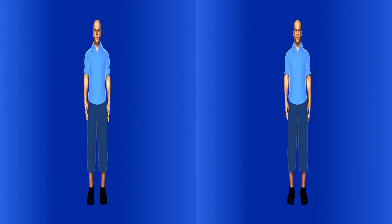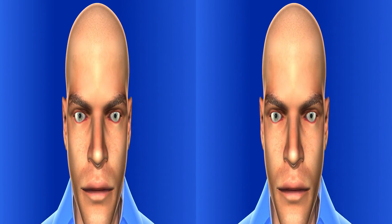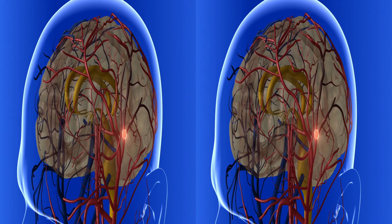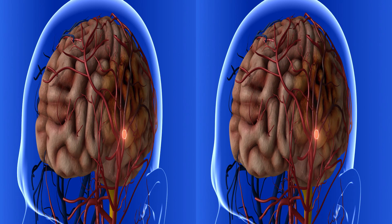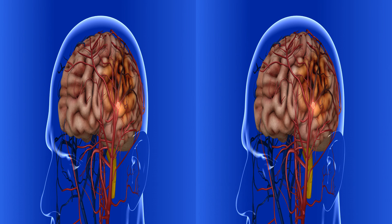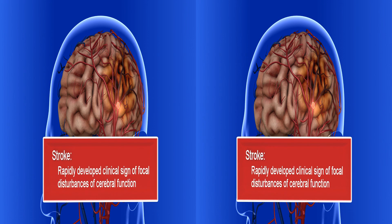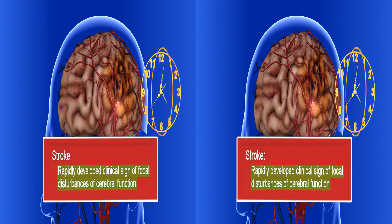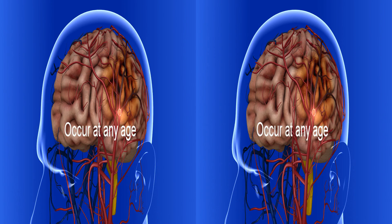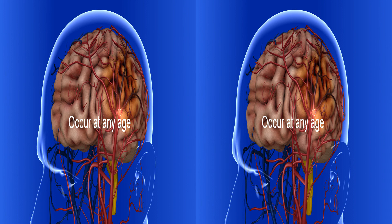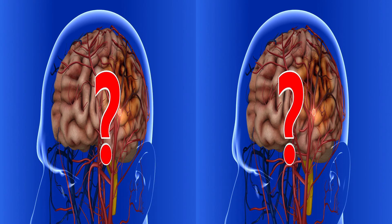A stroke is a condition in which brain cells suddenly die because of lack of oxygen. This occurs due to disturbance in the blood supply to the brain. Stroke is defined as a rapidly developed clinical sign of focal disturbances of cerebral function which lasts more than 24 hours or leads to death. Stroke can occur at any age.